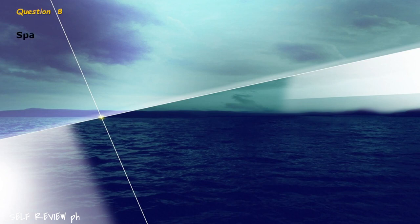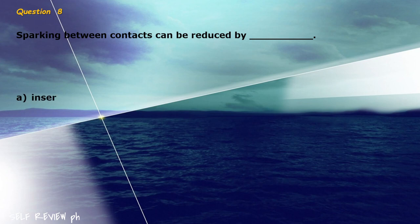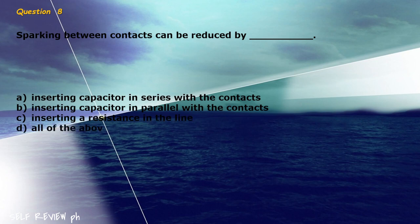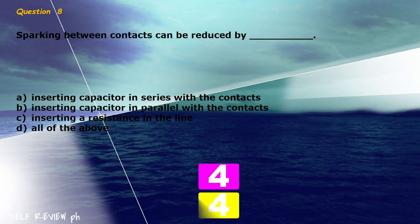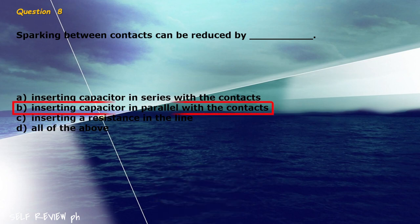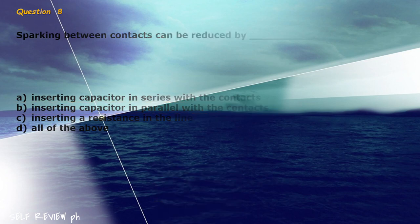Question 8: Sparking between contacts can be reduced by blank. A) inserting capacitor in series with the contacts, B) inserting capacitor in parallel with the contacts, C) inserting a resistance in the line, D) all of the above. The correct answer is letter B, inserting capacitor in parallel with the contacts.